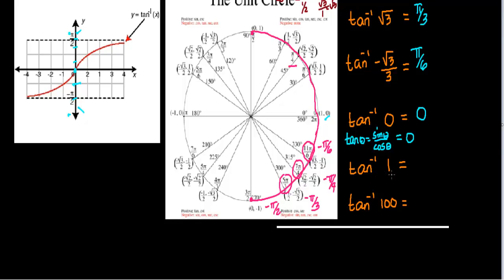Inverse tangent of positive one: you only get a tangent of one at pi fourths or negative pi fourths. Since this number is positive, we're in the first quadrant, so the answer is pi fourths.